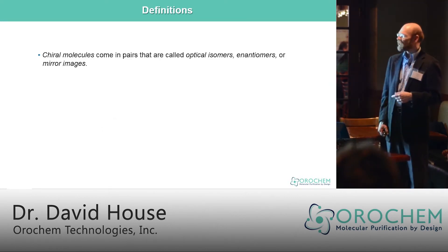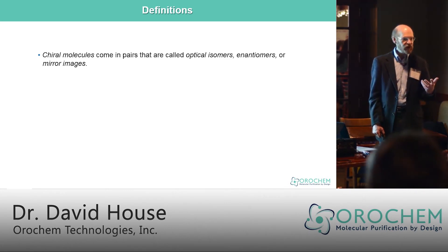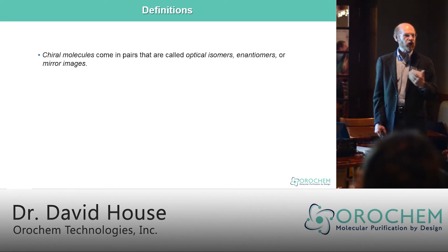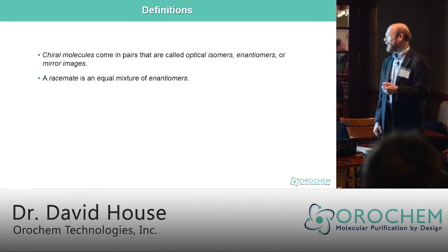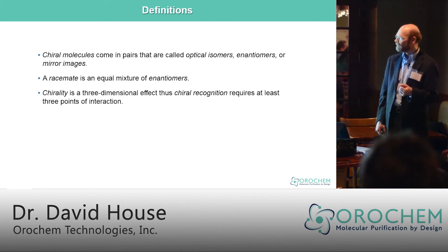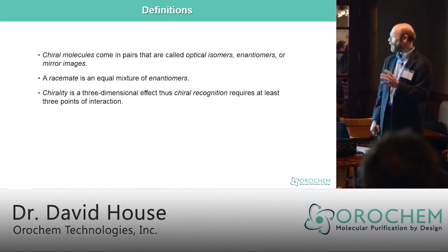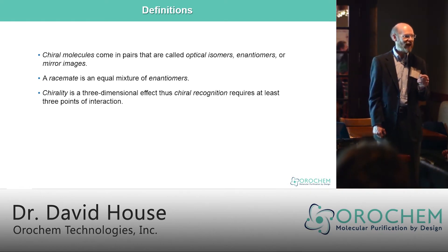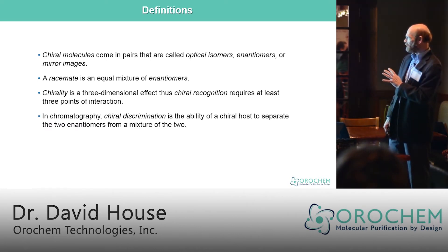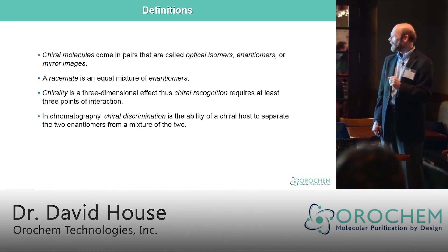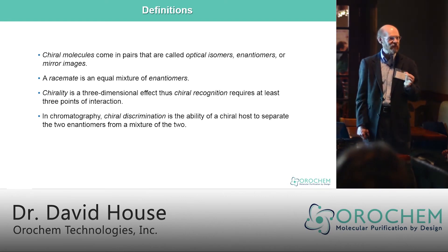A few definitions: a chiral molecule comes in pairs called optical isomers, enantiomers, or mirror images — the terms are used interchangeably. A racemate is an equal mixture of enantiomers. Chirality is a three-dimensional effect, thus chiral recognition requires at least three points of interaction. In chromatography, chiral discrimination is the ability of a chiral host to separate the two enantiomers of a mixture.